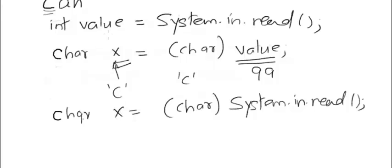Finally, for the letter N, this system.in.read will bring back 110, which will be stored as character N into this variable x.